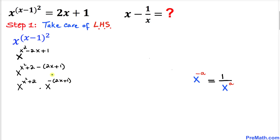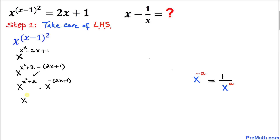Now let's focus on the factor x power negative (2x plus 1). We are going to use the rule that a negative exponent becomes positive when brought to the denominator. So this gives us x power (x squared plus 2) in the numerator divided by x power (2x plus 1) in the denominator.